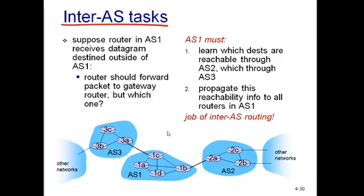The inter-domain routing algorithm learns which destinations are reachable through AS2 and which through AS3, then propagates this reachability information to all routers in AS1. That is the job of inter-autonomous-system routing.